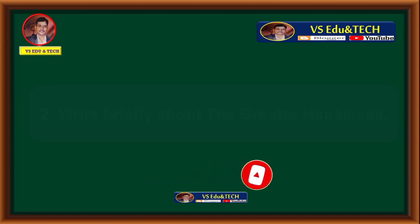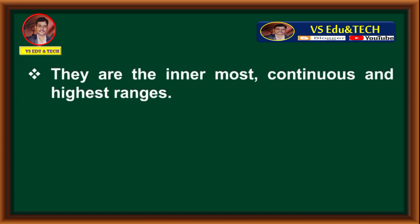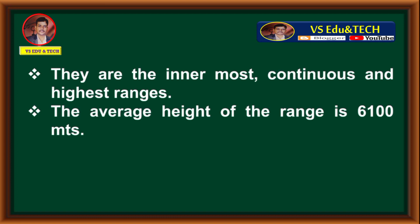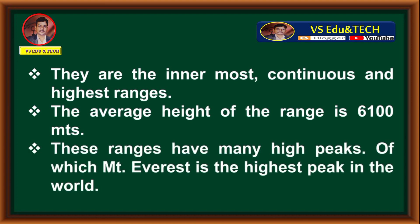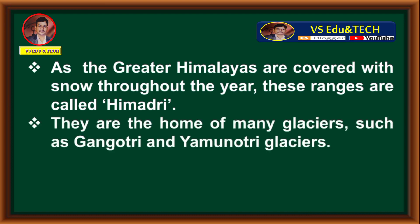Question 2: Write briefly about the Greater Himalayas. They are the innermost, continuous, and highest ranges. The average height of the range is 6,100 meters. These ranges have many high peaks, of which Mount Everest is the highest peak in the world. As the Greater Himalayas are covered with snow throughout the year, these ranges are called Himadri.